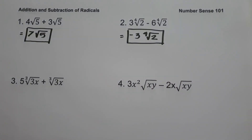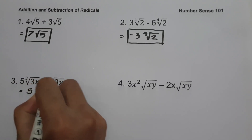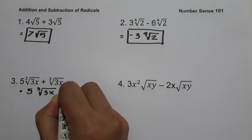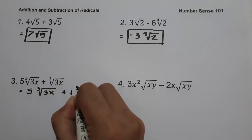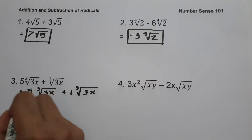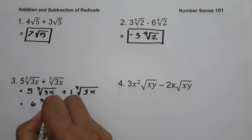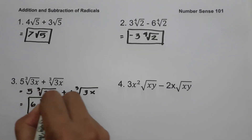On example number three we have five cube root of three x plus cube root of three x. We have the same index and same radicand. If we rewrite this, we have five cube root of three x plus one cube root of three x. Five plus one gives us six, and let us write cube root of three x. This will be our answer.